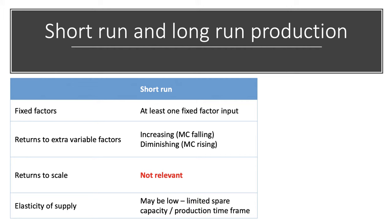In the short run, businesses can alter the amount of labor, the amount of raw materials and component parts and energy — those are the variable factors. In terms of returns to those variable factors, we talk about increasing returns to labor, in which case the marginal cost of production is falling, and diminishing returns to extra labor, in which case the marginal cost of production is going up.